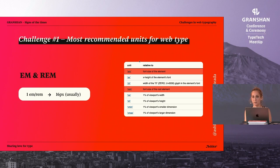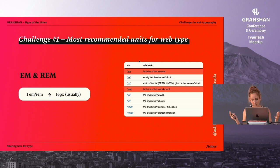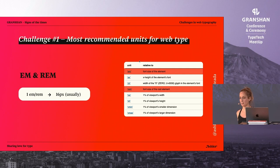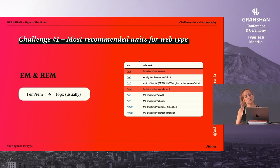Probably you've all heard about M. REM is a technical variation of it. What is important here is that 1M and 1REM is translated by the browser to 16 pixels. And maybe you're thinking: if the browser is going to translate relative units to pixels, what is the point of using relative units anyway? Why not use pixels from the beginning?